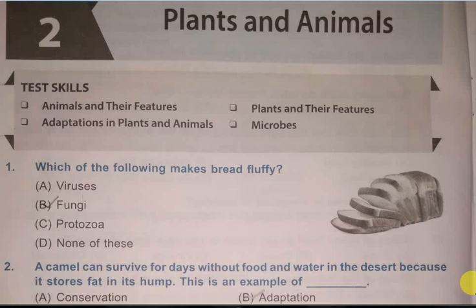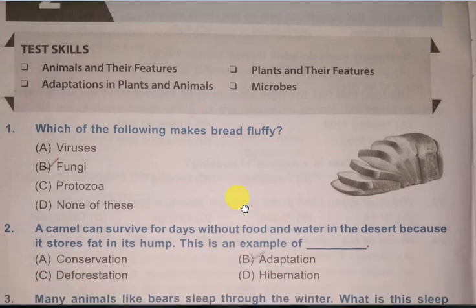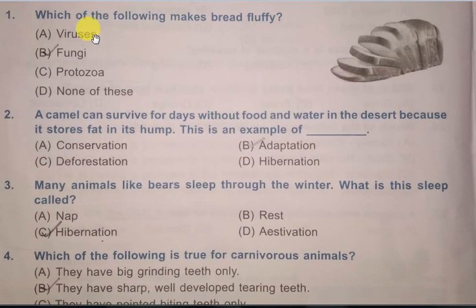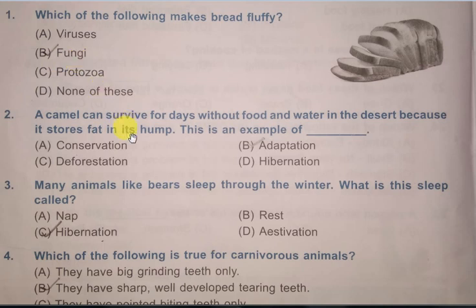Hello children, welcome back to IGKO preparation for the year 2019-20 for the Grade 4 level. Today we will start Chapter 2, that is Plants and Animals. Our first question is: which of the following makes bread fluffy? Options are: virus, fungi, protozoa, none of these. The correct answer is fungi.